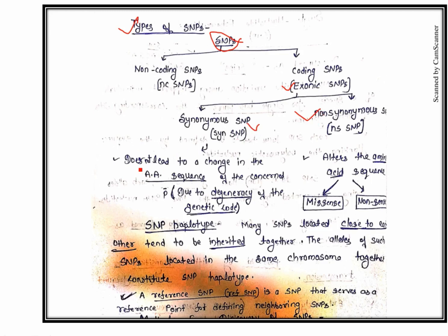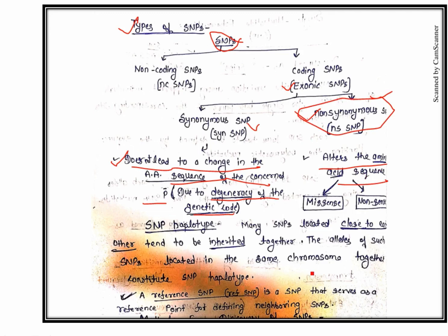Synonymous SNPs do not lead to a change in the amino acid sequence of the concerned protein due to the degeneracy of the genetic code. Non-synonymous SNPs alter the amino acid sequence and can be of two types: either missense or nonsense mutations.